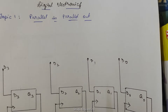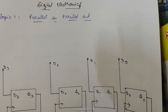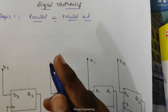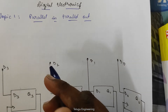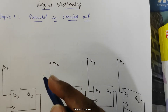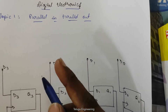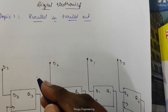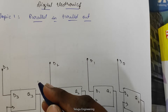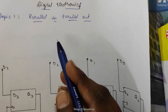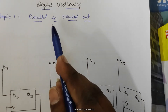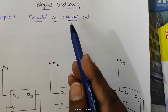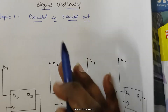Good morning everyone. Today we will discuss the next topic: Parallel Input and Parallel Output. We will discuss the types of shift registers: Serial Input Serial Output, Serial Input Parallel Output, Parallel Input Serial Output, and the fourth type which is Parallel Input and Parallel Output.